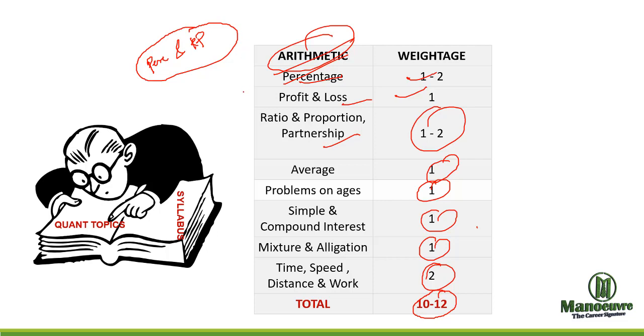If you know these topics very well you can make your calculation very easy with respect to other topics like simple interest, compound interest, mixture and allegation, time speed distance and work. In all these topics you will be using application of percentage and ratio proportion.